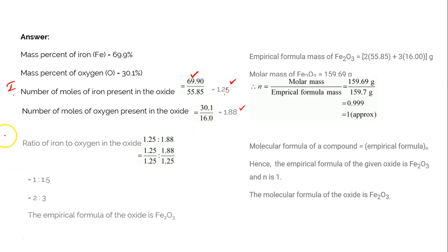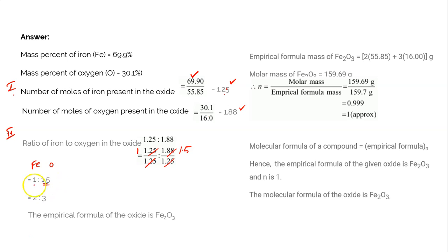Divide both values independently by 1.25. So 1.25 divided by 1.25 gives 1, and 1.88 divided by 1.25 gives approximately 1.5. The ratio is 1 (iron) to 1.5 (oxygen). Since we can't have decimals in an empirical formula, multiply the whole ratio by 2: 1 into 2 equals 2, and 1.5 into 2 equals 3. So the ratio of iron to oxygen is 2:3, meaning the empirical formula is Fe2O3.